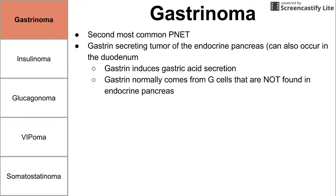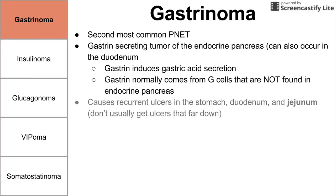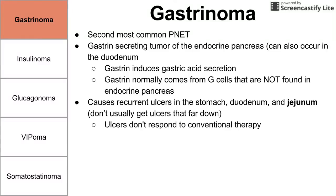Gastrin normally comes from G cells that are not found in the endocrine pancreas, so it's a little strange that they're there, but the cells in the endocrine pancreas can develop gastrin and form a gastrinoma. This endogenous production of gastrin causes recurrent ulcers in the stomach, duodenum, and jejunum. You don't usually get ulcers as far down as the jejunum, so having ulcers there can be a sign of gastrinoma — it's more specific than ulcers in the stomach and duodenum. These ulcers typically don't respond to conventional therapy for normal stomach ulcers.